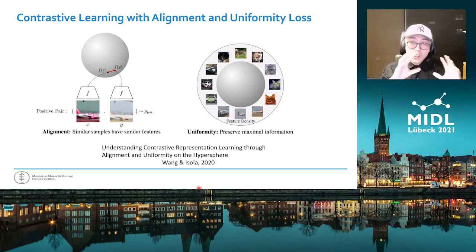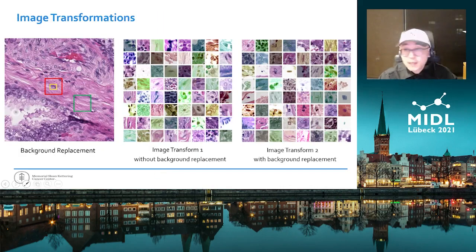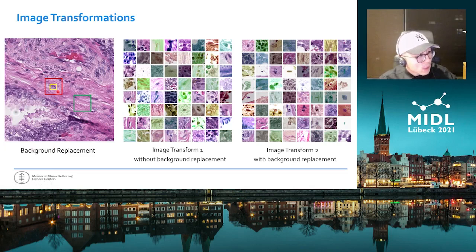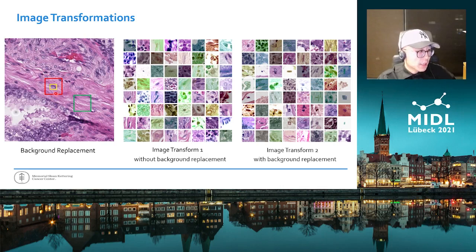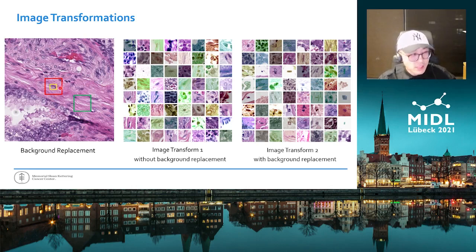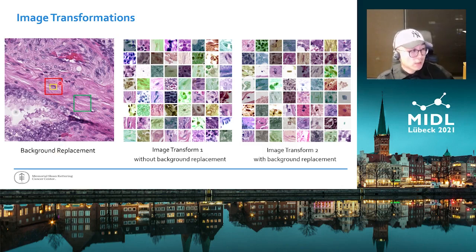The intuition is that representations learned this way could be useful for unsupervised clustering or classification. We applied a series of standard image transformations including random rescaling, color jittering, Gaussian blurring, and random flipping. We also proposed a background replacement augmentation. The idea is that we want to learn the particular morphological features associated with the nucleus itself, rather than features of its background. For each nucleus image, we first generate the bounding box of the nucleus based on the segmentation mask predicted by HoverNet. Then we keep the regions inside the bounding box unchanged, and replace the regions outside the bounding box with an image of the same size from nearby tissue, so we perturb the background of the nucleus without changing the context too drastically.